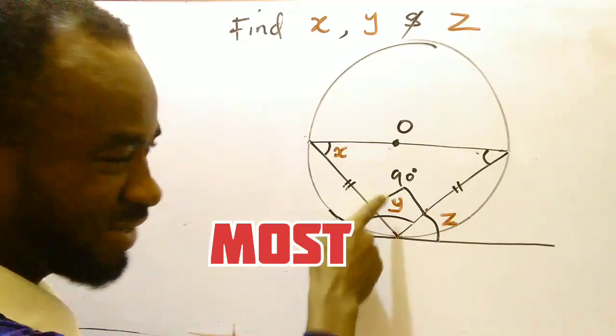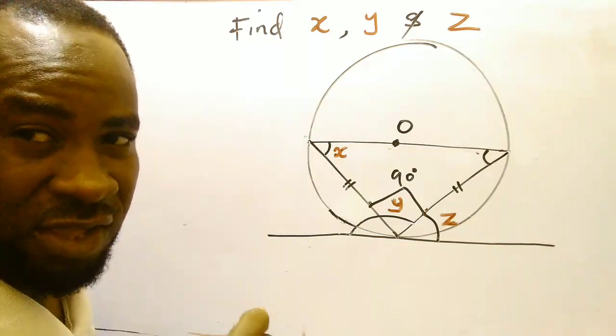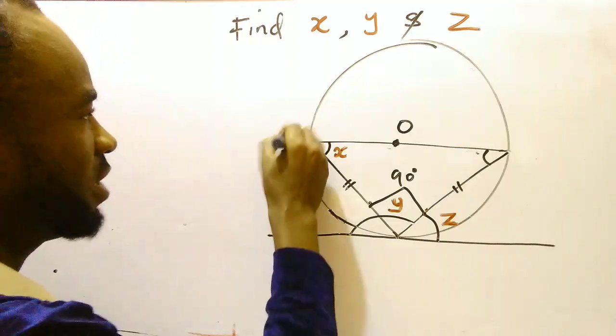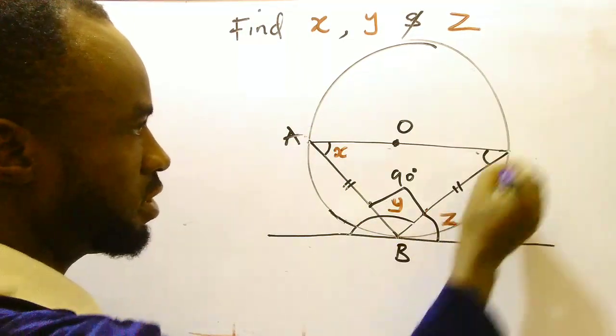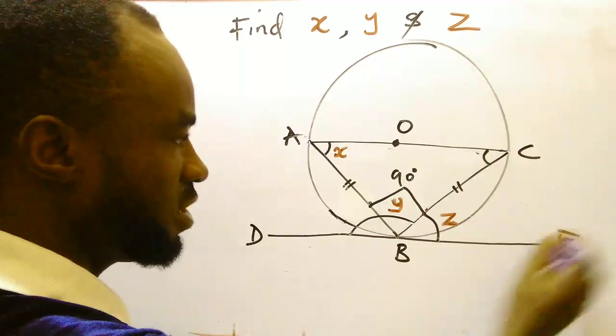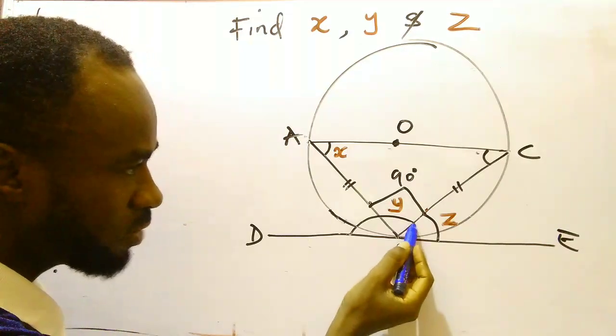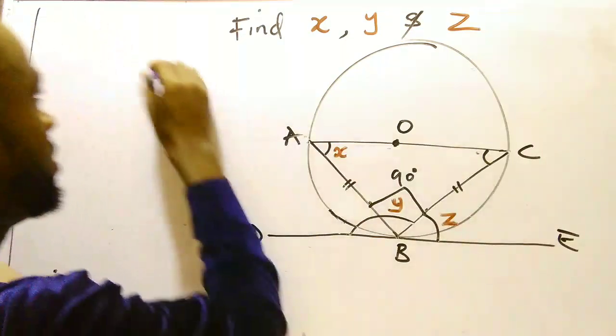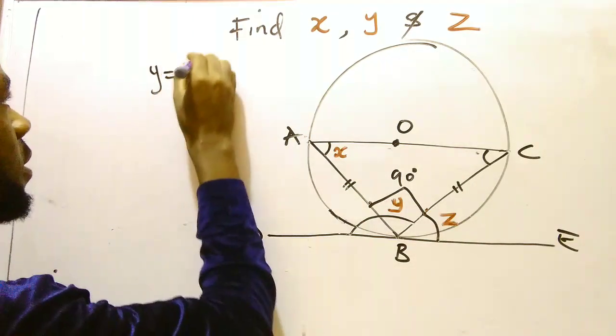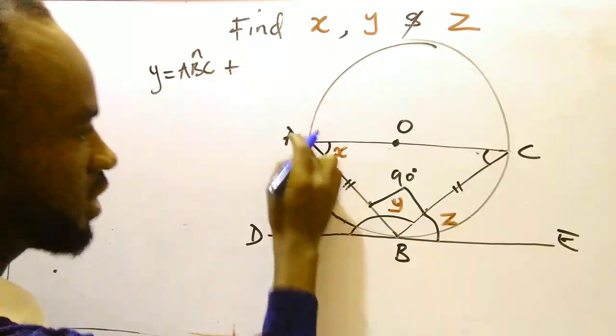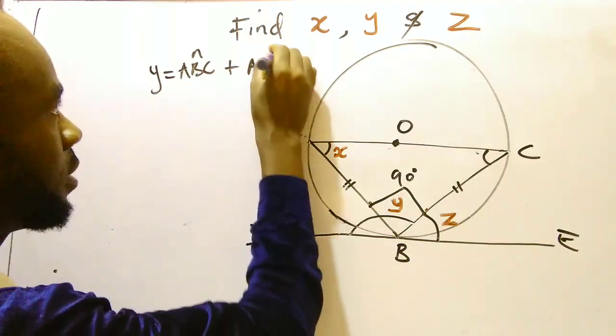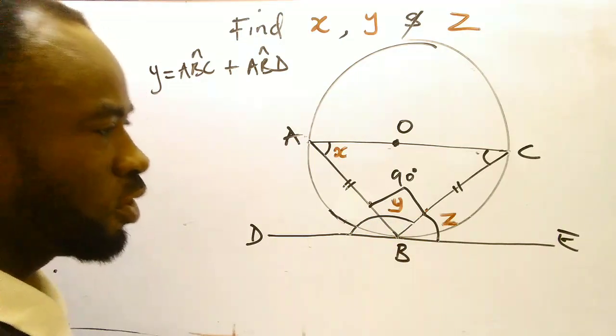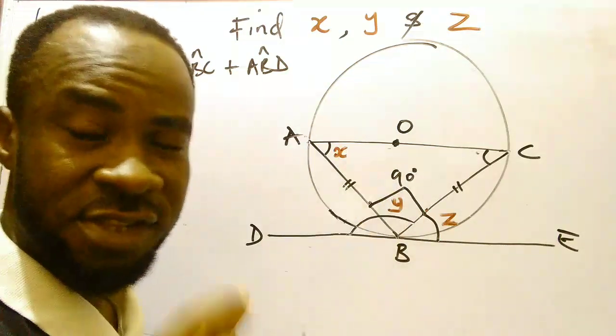Now note that this angle that is 90, this is not the value of Y. This is where most people made the mistake. If I compare this angle here A, B, C, D, and E, if you check how this angle Y has been marked, Y is ABC plus ABD. Can you see that? Because that's how it's been marked. So if you say Y is 90 then you are wrong.